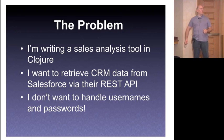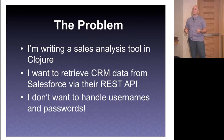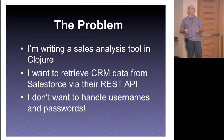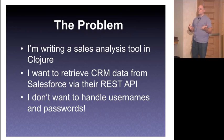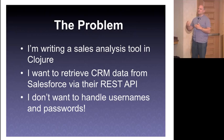This is a kind of synthetic problem. I'm writing some kind of tool in Clojure — it could be sales analysis, any kind of analysis tool where you want to pull data from several sources and combine it. I want to retrieve CRM data from Salesforce via the REST API, and I'm going to distribute my app to Salesforce customers. Salesforce has 100,000 customers — a great market. And I don't want to be dealing with those customers' passwords.